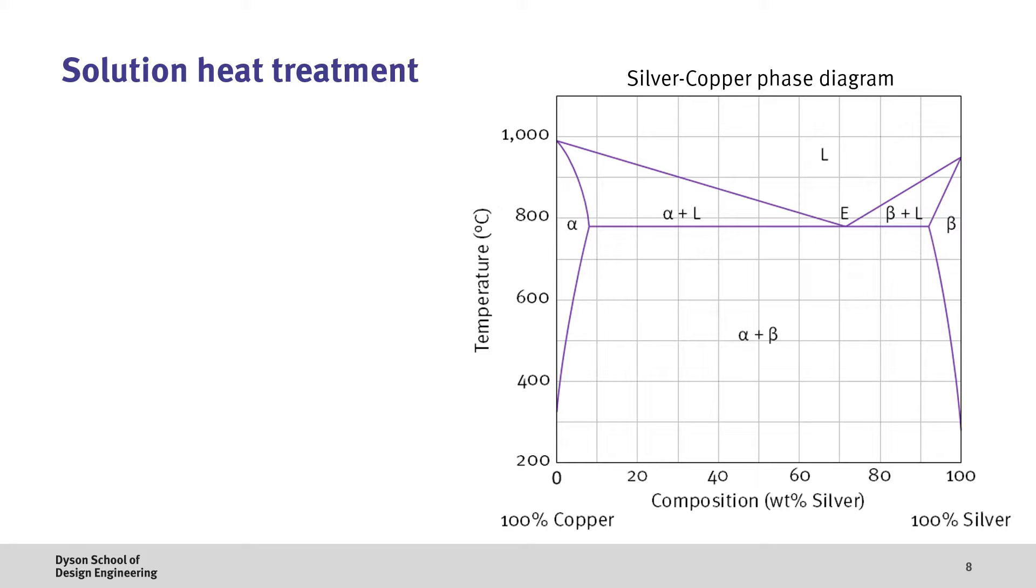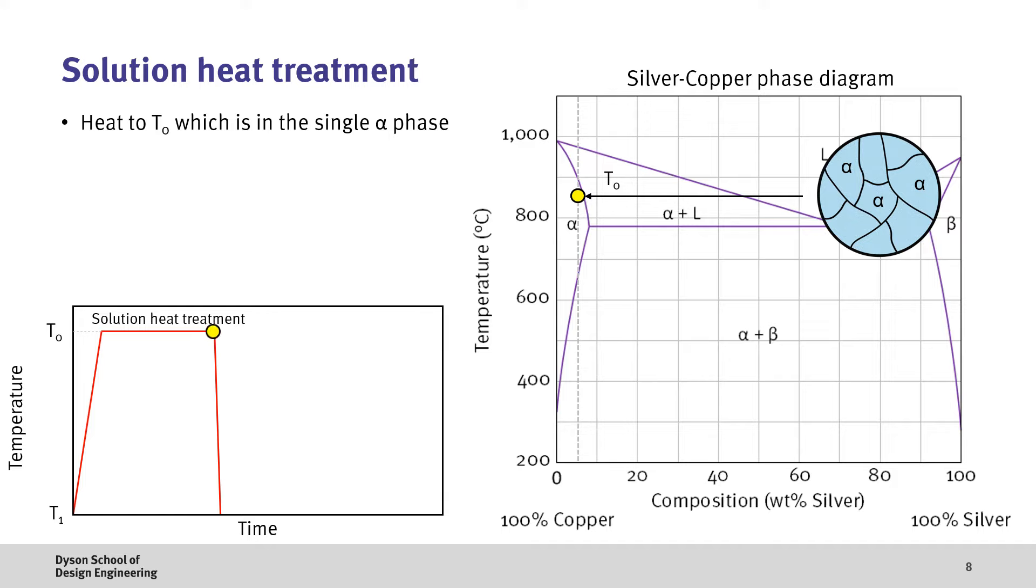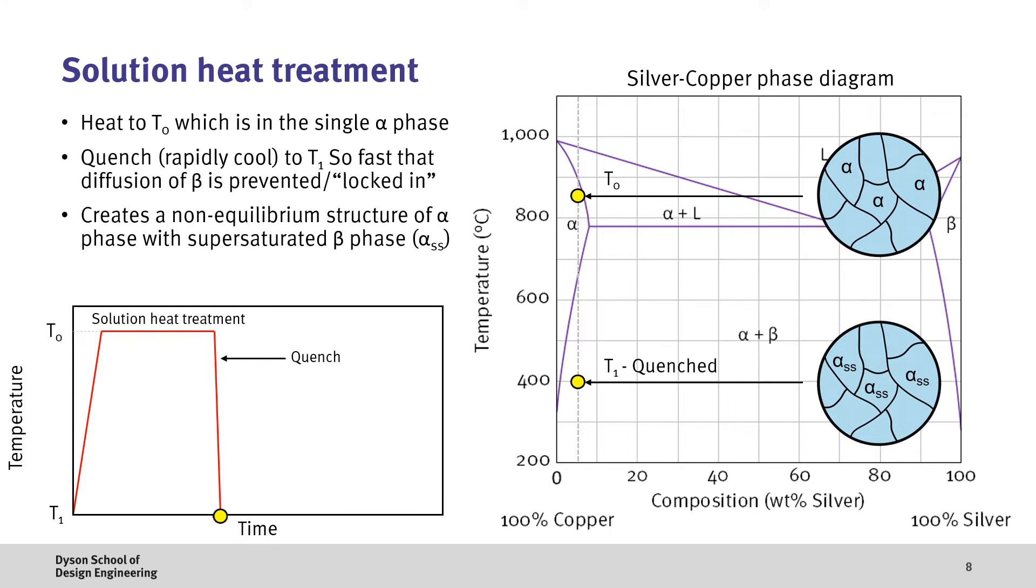Here, let's take the example of a silver copper alloy which has limited solid solubility as shown in the phase diagram. If we select a low silver composition and heat the material up to a temperature of T0, which is the single phase alpha region, we have a homogeneous and single phase material. If we then rapidly cool the material from T0 to T1, we enter into the alpha plus beta region. However, because we've cooled the material so fast, this doesn't give enough time for the atoms to diffuse to their thermodynamically preferred position. And as such, we end up with a supersaturated alpha phase, where the beta phase hasn't had time to precipitate out yet.